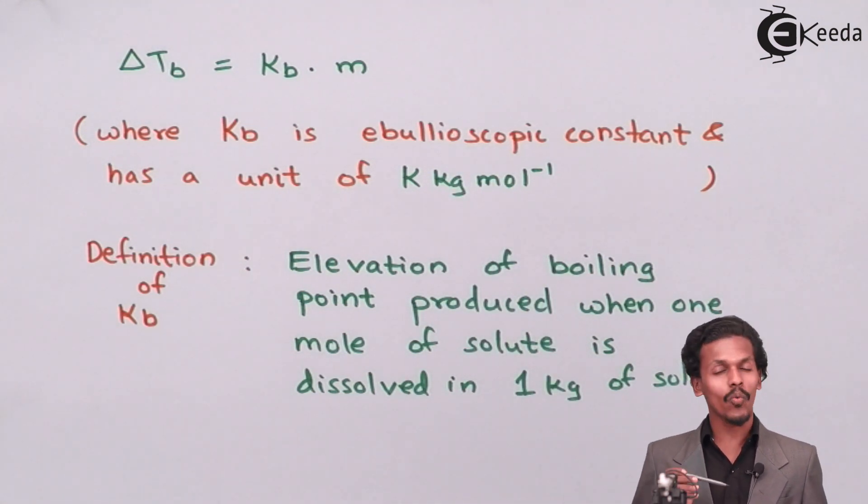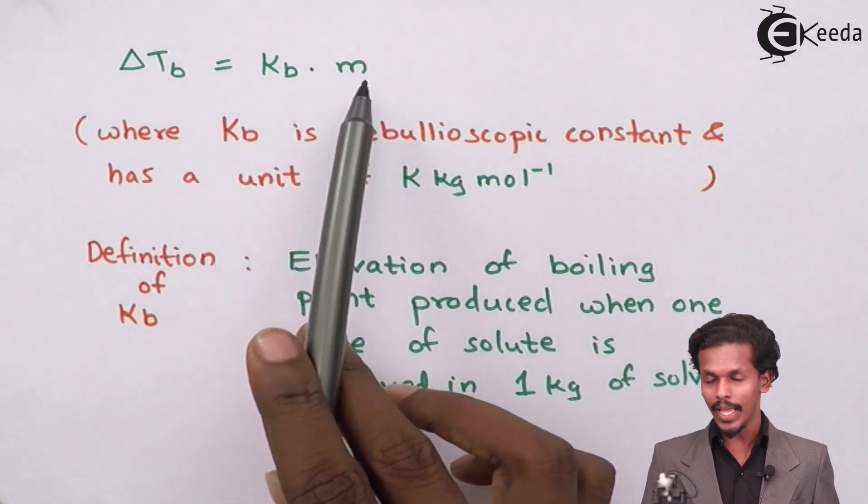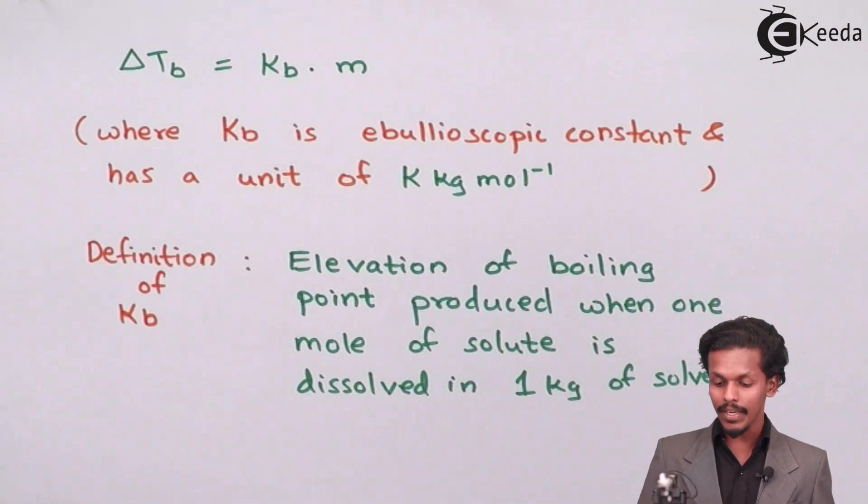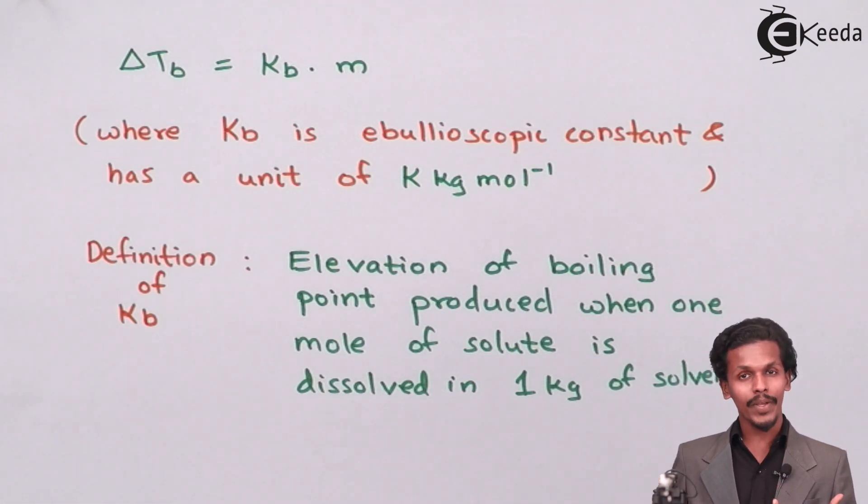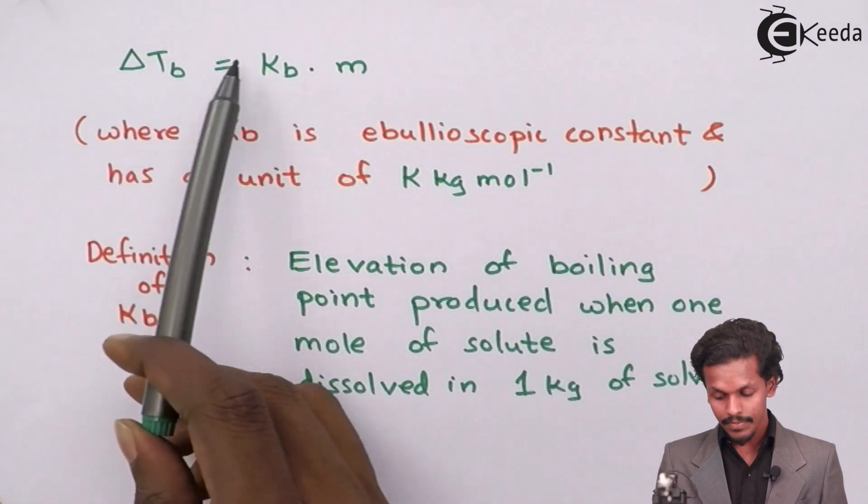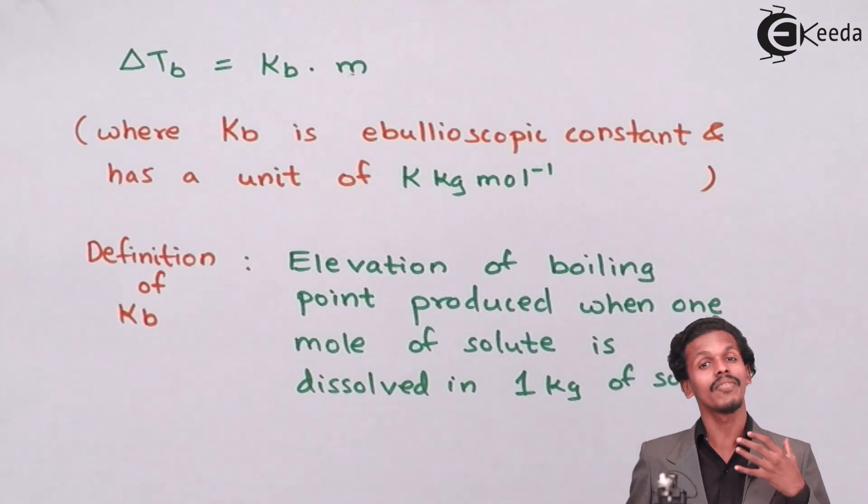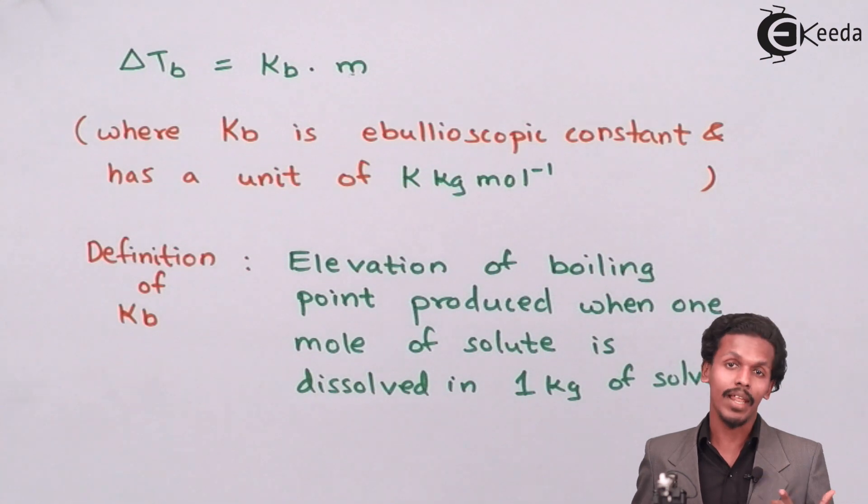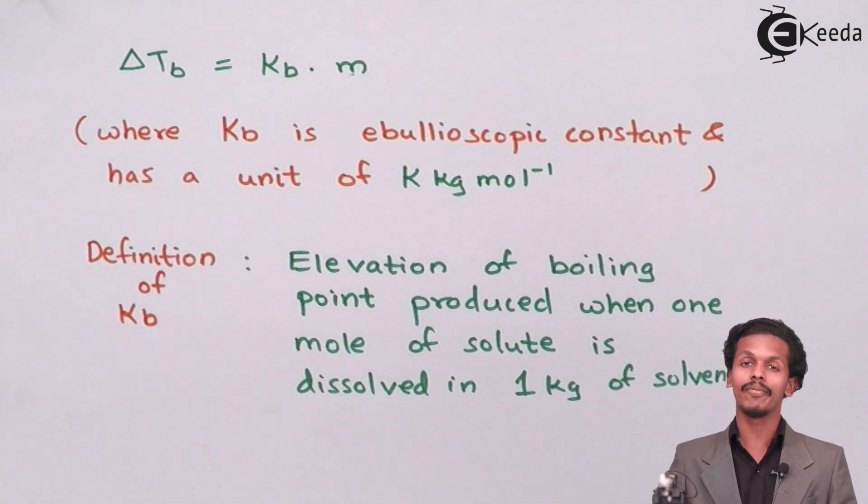Let us know what is exactly Kb or ebullioscopic constant. The formula is delta Tb equals Kb into m, and Kb equals delta Tb only when the molality is 1. According to that, the definition of ebullioscopic constant Kb is the elevation of boiling point produced when one mole of solute is dissolved in 1 kg of solvent, meaning one molal solution.